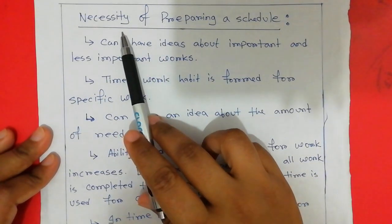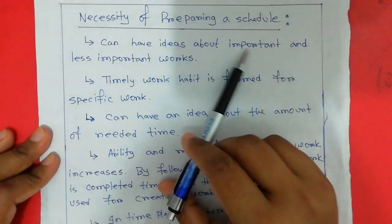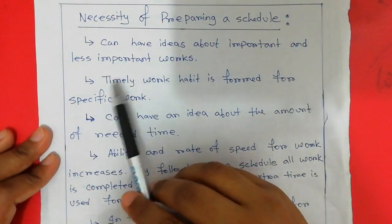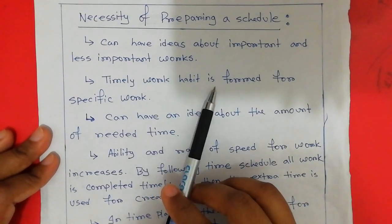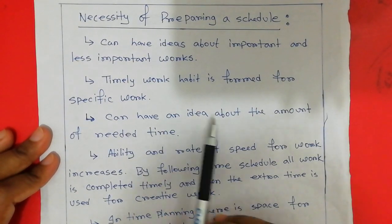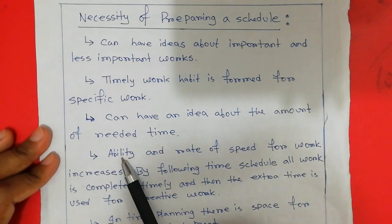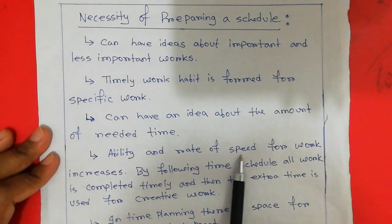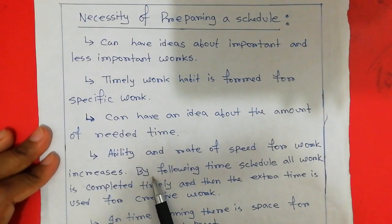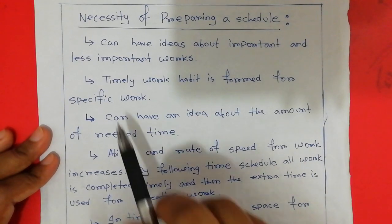The necessity of preparing a schedule. Number one: you can have ideas about important and less important works. Number two: timely work habit is formed for specific work. Number three: you can have an idea about the amount of needed time. Number four: ability and rate of speed for work increases. By following a time schedule, all work is completed timely, and then extra time is used for creative work.